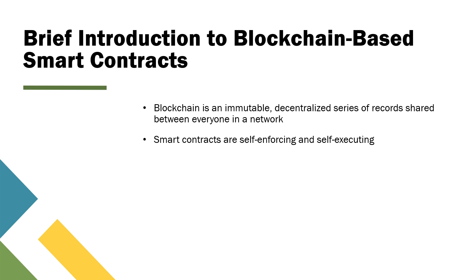What are blockchain-based smart contracts? A blockchain is an immutable, decentralized series of records that are shared between everyone in a network. Imagine a vault. In a normal network, there is a single lock with a single key to access the network. But with blockchain, there might be three people on the network who each have their own lock and their own key to access that vault. Everyone has access rather than a single trusted third party.